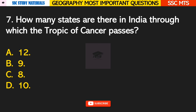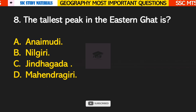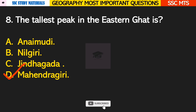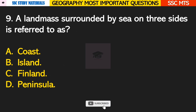Question number 7: how many states are there in India through which the Tropic of Cancer passes? Answer C — the Tropic of Cancer passes through eight states. Question number 8: the tallest peak in the Eastern Ghats is? Answer D — Mahindragiri.